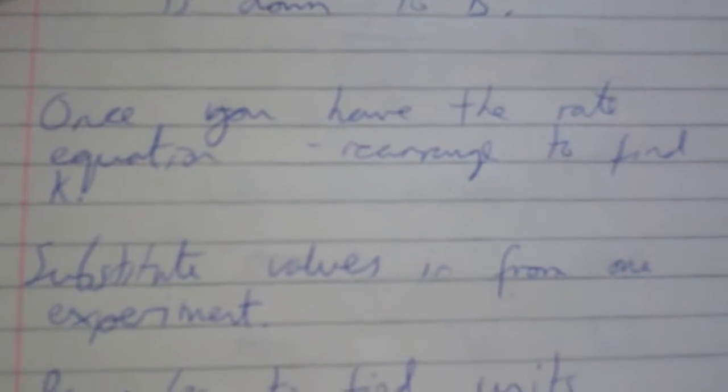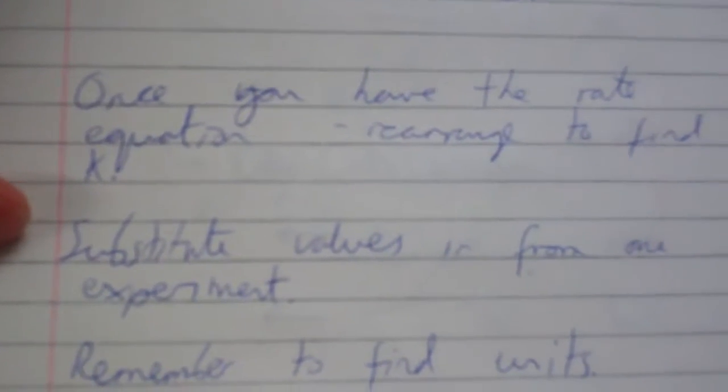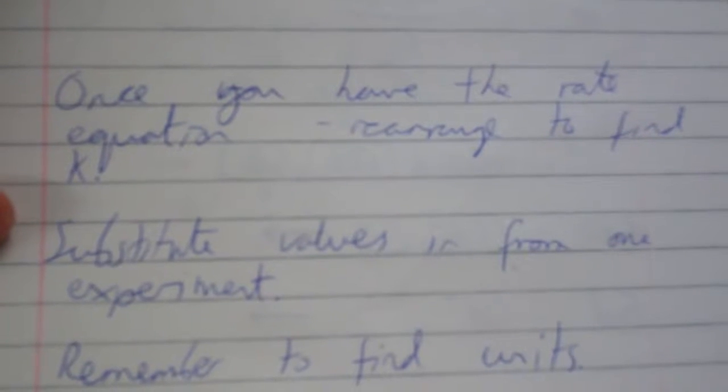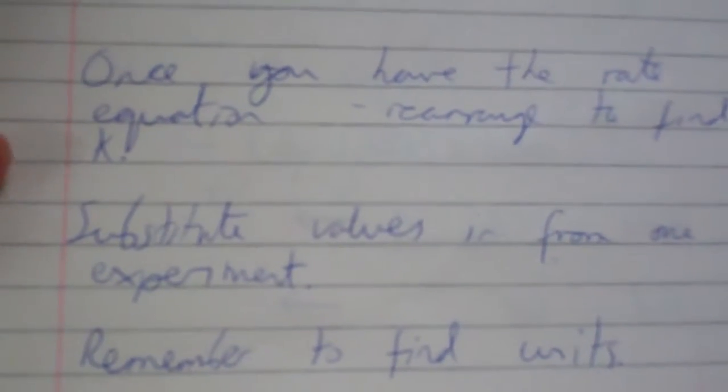Once you have the rate equation, rearrange to find K. And substitute the values in from one of the experiments, just be consistent with which experiment it is, and then find the units.